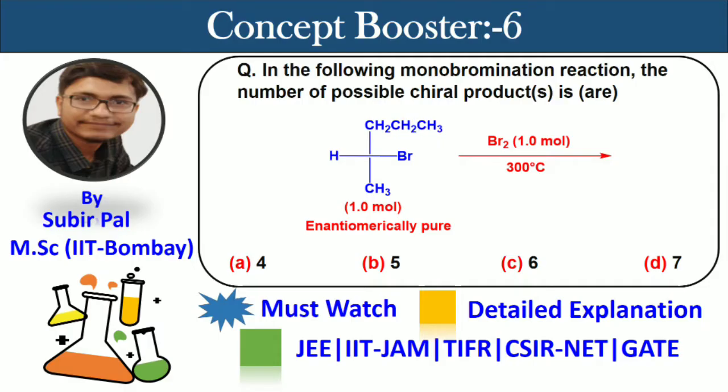Hello everyone, welcome to our channel, The Education Seeker. This is problem number six of the concept booster series. The problem is: in the following monobromination reaction, the number of possible chiral products is? Here, one mole of enantiomerically pure bromoalkane is treated with one mole of bromine at 300 degrees centigrade, and four options are given.